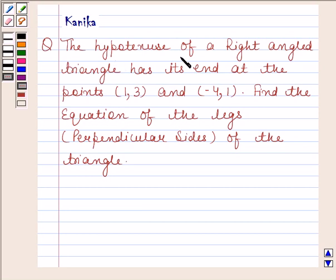The question says the hypotenuse of a right-angled triangle has its end at the points (1, 3) and (-4, 1). Find the equation of the legs (perpendicular sides) of the triangle.